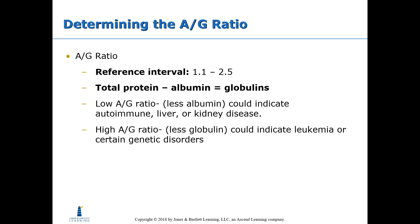The A-G ratio refers to the albumin-to-globulin ratio, with a reference interval of 1.1 to 2.5. Total protein and albumin are measured, then the two are subtracted to get total globulins, and divided to get the ratio. A low A-G ratio means less albumin in the plasma and could indicate autoimmune liver or kidney disease. A high A-G ratio means less globulin, which could indicate leukemia or certain genetic disorders.